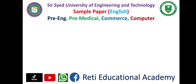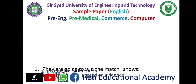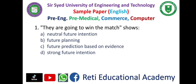There will be the same English questions for pre-engineering, pre-medical, commerce, and computer group. Question number 1: 'They are going to win the match' shows — A. Natural Future Intention, B. Future Planning, C. Future Prediction Based on Evidence, D. Strong Future Intention. The correct answer is C: Future Prediction Based on Evidence.